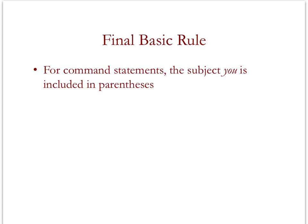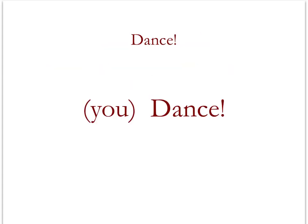Our final basic rule is that for imperative command statements, the subject 'you' is implied. You don't say 'you dance,' you just say 'dance.' So that implied subject is included in parentheses. The sentence in this case is 'dance.' What you do is write the implied subject, you, in parentheses, before the given verb, dance. You draw an underline between those words, and then you separate the implied subject, you, from the verb, dance, by a vertical line that crosses the underline.